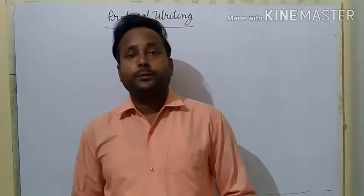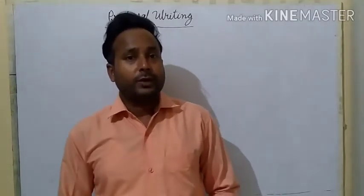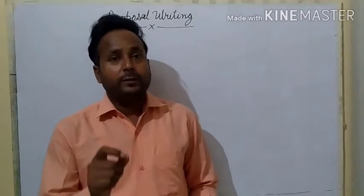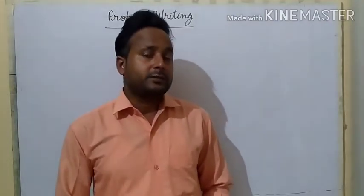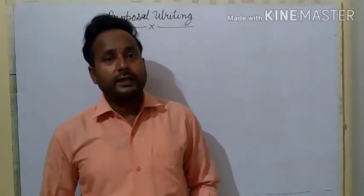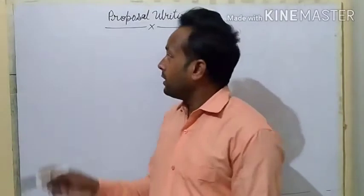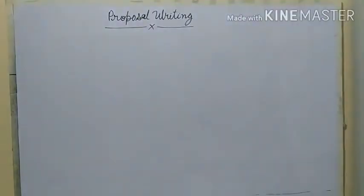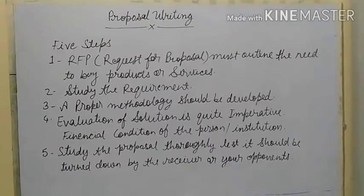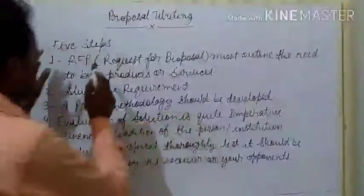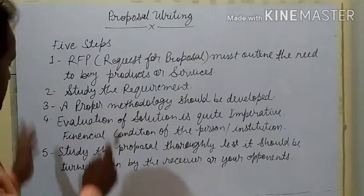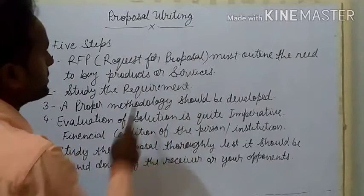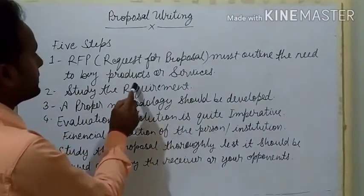We will talk step by step about the important points that will help you in writing a proposal. First of all, I will tell you about five steps, then explain each one. Write these down in your notebooks. Step one: RFP means 'Request for Proposal' — it must outline the need to buy products or services.